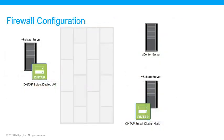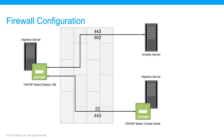If a firewall exists on the external network, the Deploy VM must be able to connect to the vCenter server, ESXi hosts, and ONTAP SELECT nodes and cluster management IP addresses. The initial connection to the vCenter server is established using SOAP over SSL on TCP port 443. Then a connection is opened using SSL on port 902. The Deploy VM must also communicate with ONTAP SELECT nodes and cluster management IP addresses using ICMP on ping, SSH on port 22, and SSL on port 443. NetApp recommends that firewall ports 7200 through 7400 be open both inbound and outbound to enable access to vSphere.